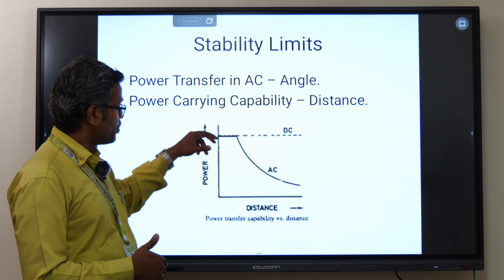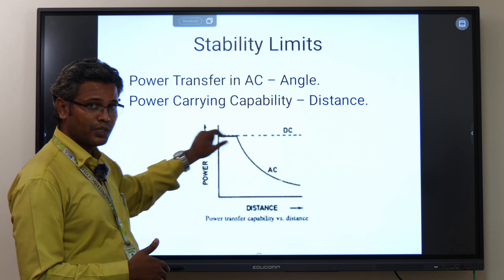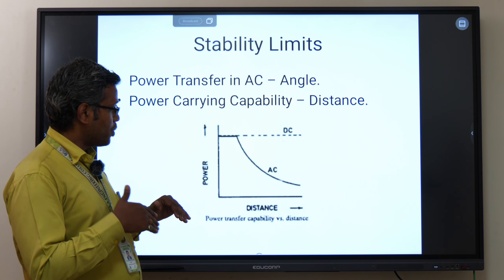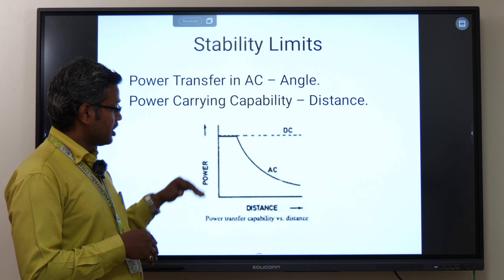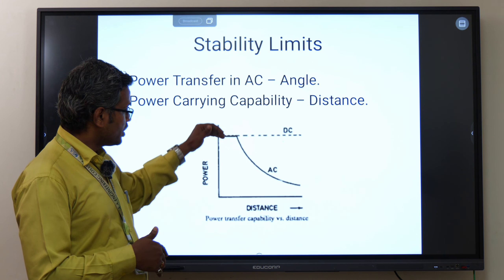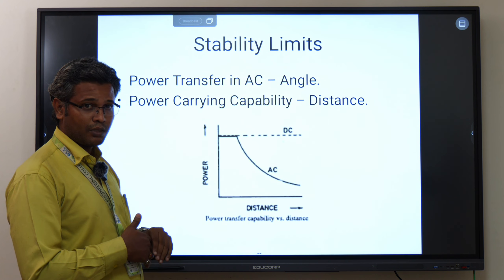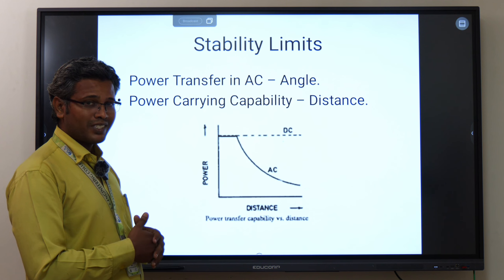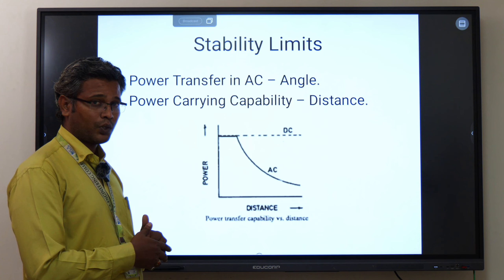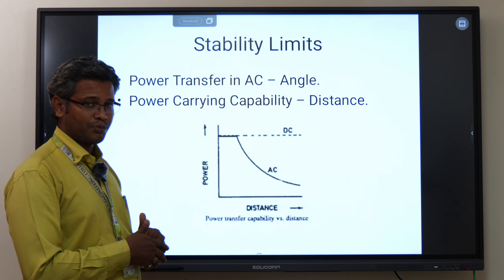For AC, up to a certain limit — termed as the surge impedance load — the power transfer capability remains constant. Above that, as distance increases, the power transfer capability declines. That is why we prefer DC transmission for long distances, as there are no stability problems in DC, whereas AC has stability limit problems for long transmission lines.